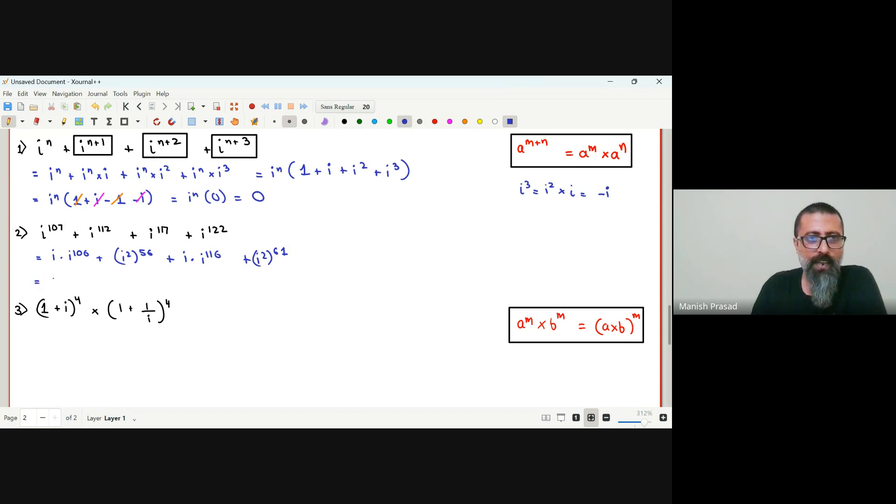Now this will be i and this will be i square, 53. Let's see if I am doing it correctly or not. 56. Then i, this will be i square, 2, 5 is 10, 2, 8 is 16. I square is negative 1, negative 1 to the power of 61.